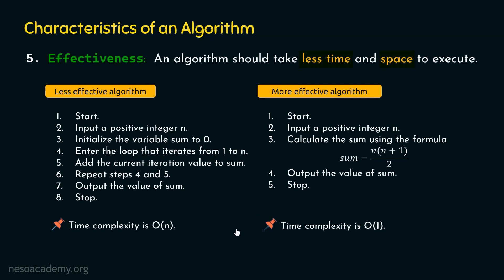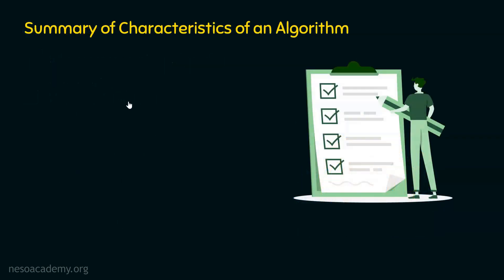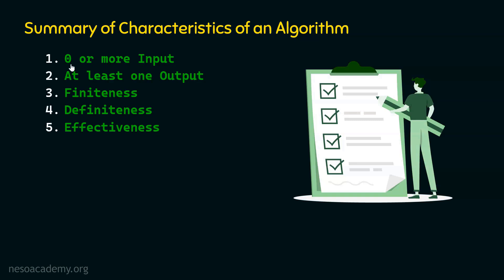With that, we have understood all the characteristics of an algorithm. Here is the summary: First, zero or more inputs — an algorithm can accept zero or more than one inputs. Second, it must generate at least one output. Third, it must take a finite amount of time. Fourth, it must be unambiguous. Fifth, an algorithm should be effective, meaning we must always target algorithms that take less time and space. These are all the characteristics of an algorithm to keep in mind.